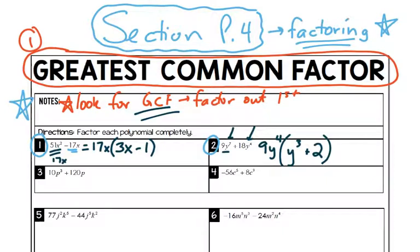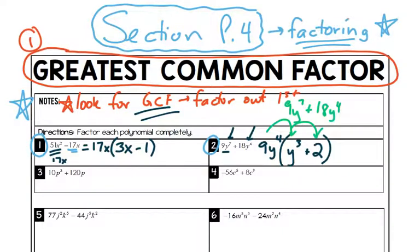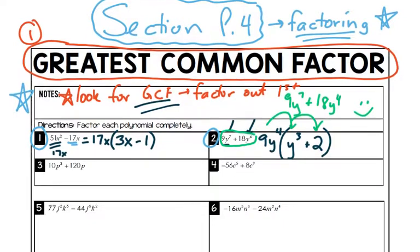If you want to check, you can multiply back in — let's show why that always works. Distribute in: 9y⁴ times y³ is 9y⁷, plus 9y⁴ times 2 is 18y⁴. We got the same thing we started with. You can always double check by multiplying out.